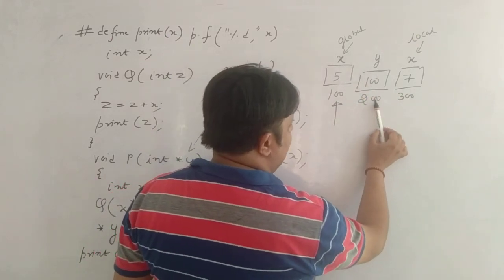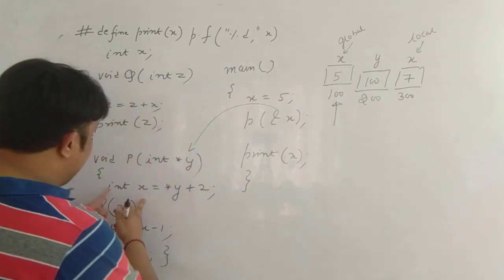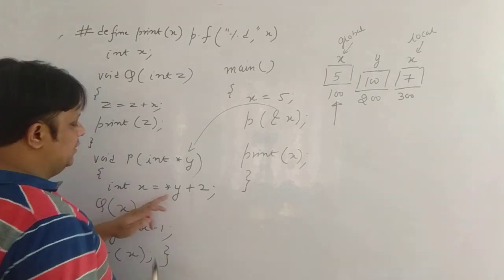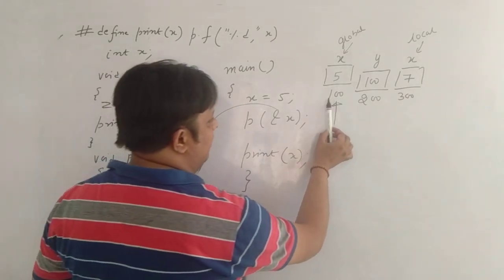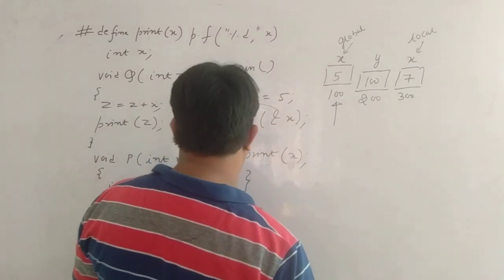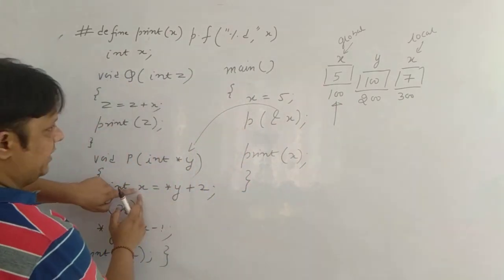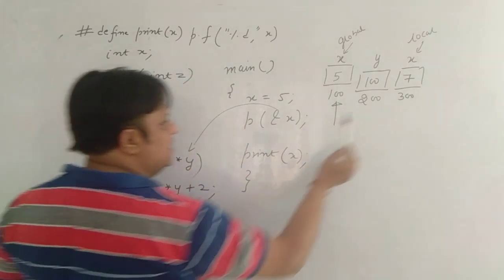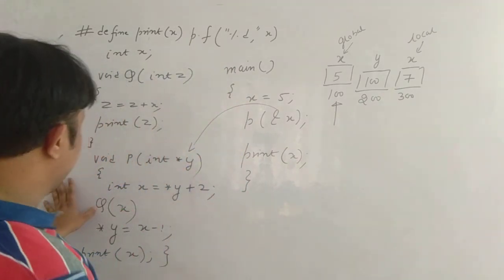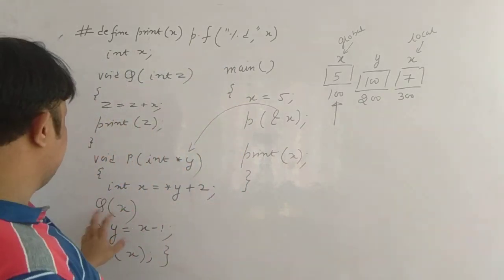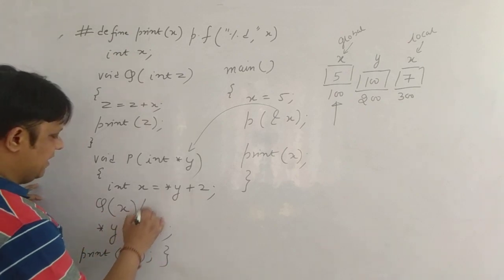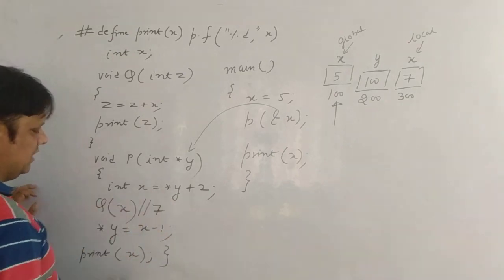Let's suppose the address is 200. Now, index — this x is local to this function, right? Index is equal to star y. Y was pointing at 100, star of this is 5. So 5 plus 2 is 7. That 7 you are storing in the variable x. Therefore, the value of x is 7. Now you are passing q of x — the value of x is 7, right? Here the value of x is 7 because it's a local.